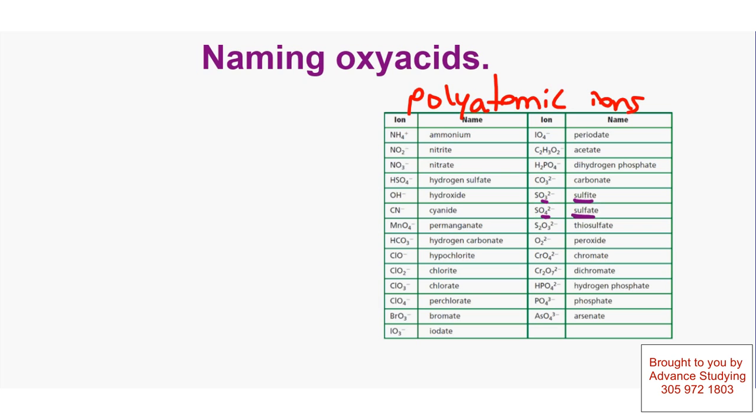If we have to name the acid with sulfite, the ending becomes -ous, in this case sulfurous acid. And if we have to name the acid with -ate ending, it becomes sulfuric acid.